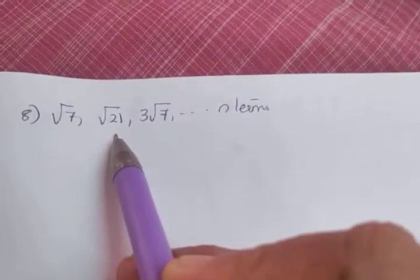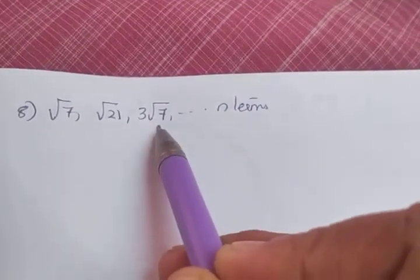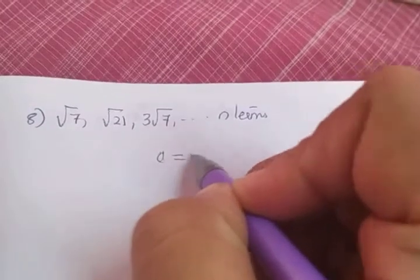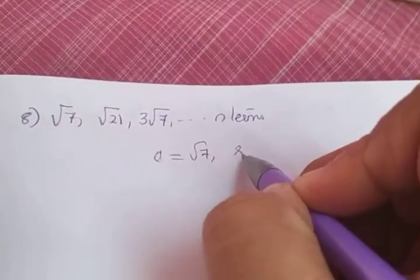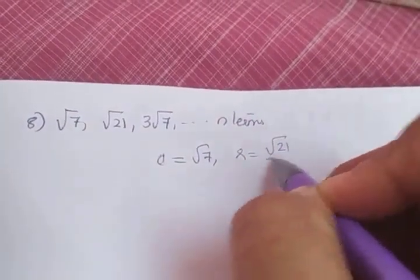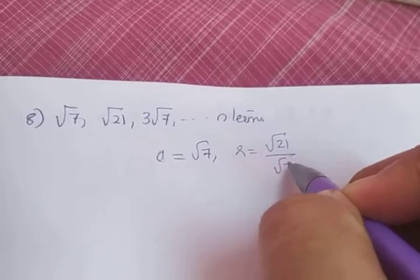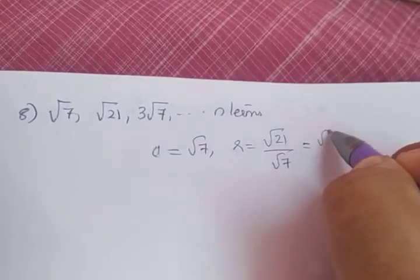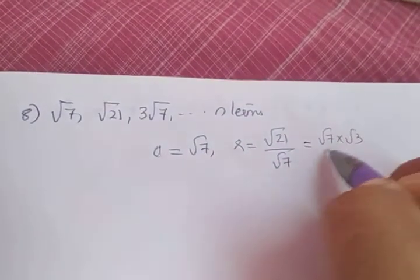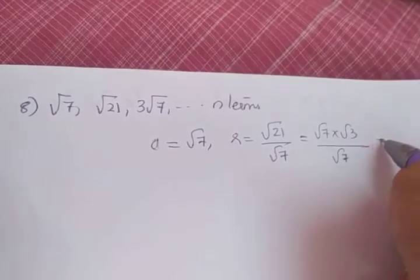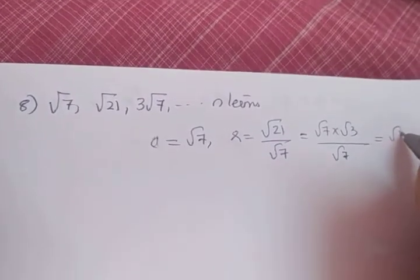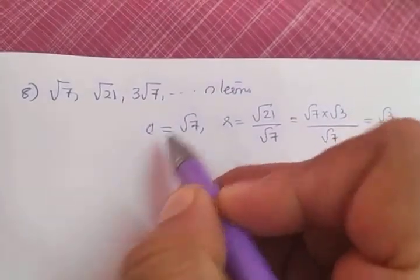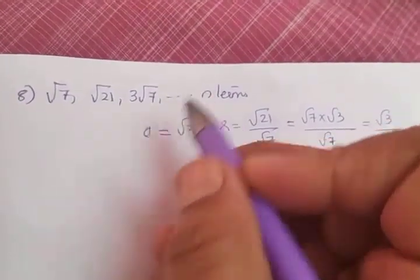Next question: √7, √21, 3√7, etc. to n terms. What is a? a is equal to √7. What is r? r is equal to √21 divided by √7 (second term by first term). √21 can be written as √7 × √3, divided by √7, so √7 gets cancelled, giving the value of r as √3.